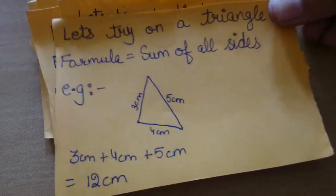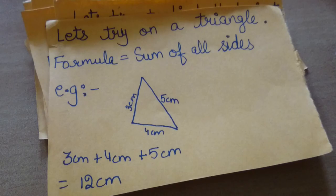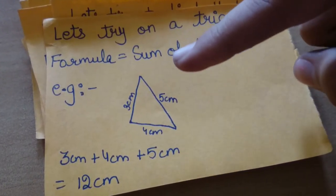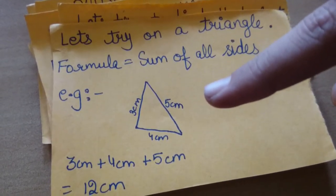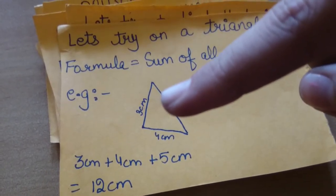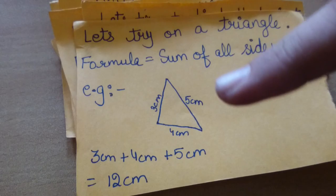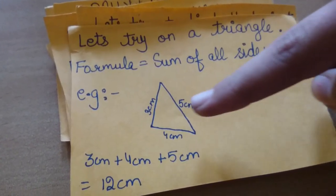Let's try a triangle. Formula is sum of all sides. Let's take the example of a scalene triangle. One side 3 cm, second 4 cm, and the third 5 cm. We will add all of them: 3 cm plus 4 cm plus 5 cm. That is 12 cm, and 12 cm is the perimeter of the triangle.